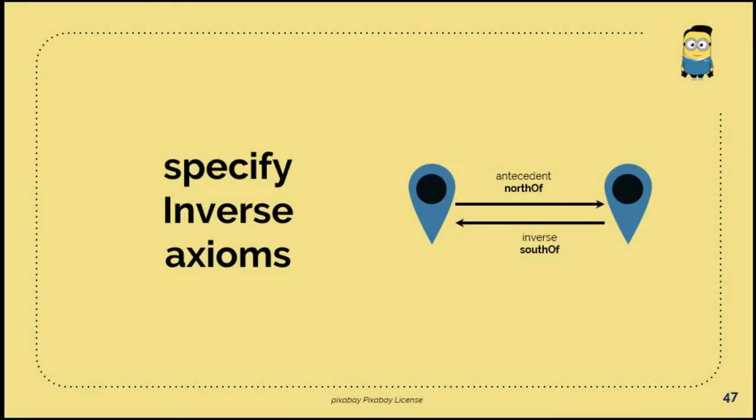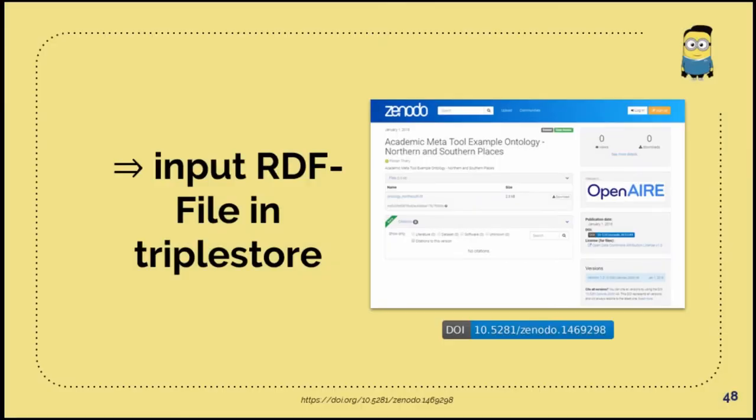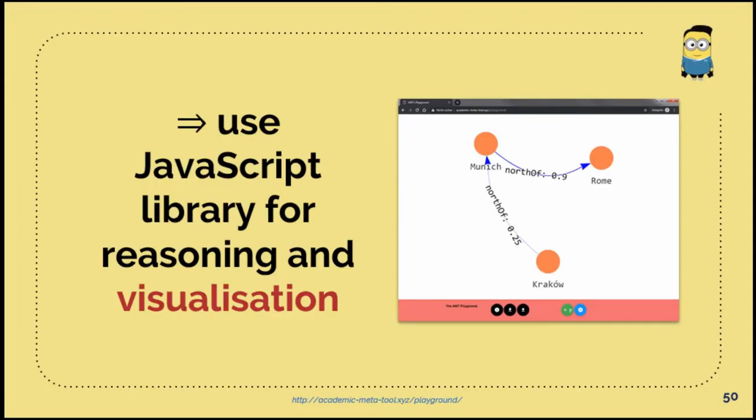We can also specify some kind of inverse because north is the inverse of south. And then we put all that RDF file in some kind of triple store and import also some kind of data in the triple store. For example, Graco is in the north of Munich of about 25 percent and Munich in the north of Rome of about 90 percent. Just a small example.